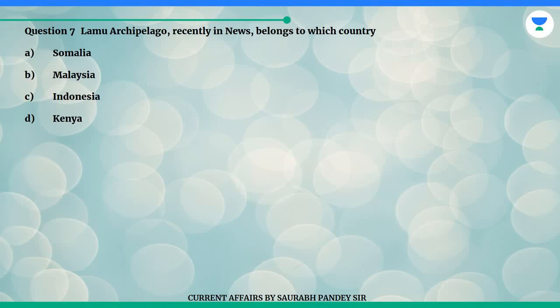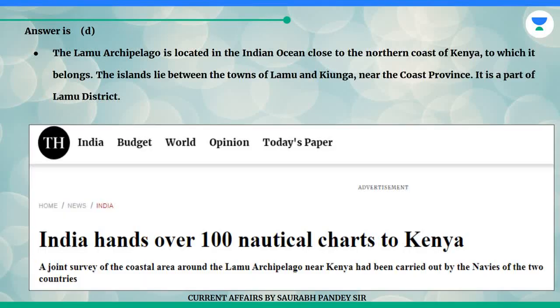Question 7. Lamu Archipelago, recently in news, belongs to which country? A. Somalia. B. Malaysia. C. Indonesia. D. Kenya. Answer is D. The Lamu Archipelago is located in the Indian Ocean close to the northern coast of Kenya, to which it belongs. The islands lie between the towns of Lamu and Kiunga near the coast province. It is a part of Lamu district.